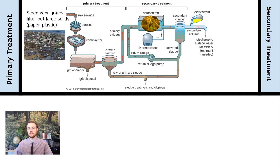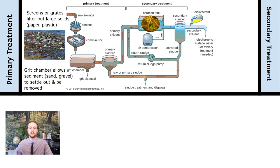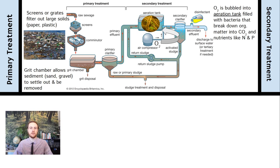Primary treatment is the removal — the screening out — of large physical debris such as plastic, toilet paper, and leaves. Next, we have a grit chamber, which allows inorganics like sand and gravel to settle out and fall to the bottom, disposed of as sludge, which we'll discuss shortly. The reason we filter out these large pieces of waste and grit is because in secondary treatment we use bacteria to break down organic matter, and they won't break down plastic or paper nearly as efficiently as fecal matter.